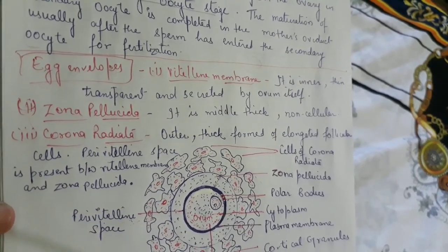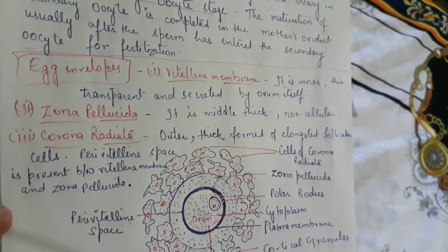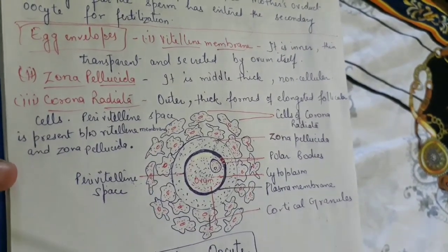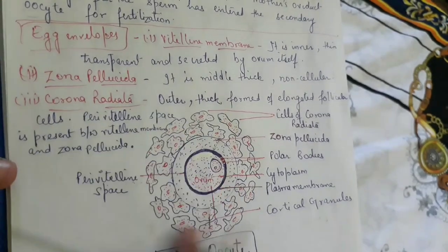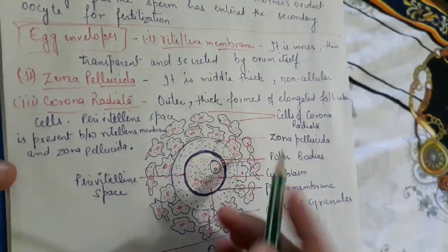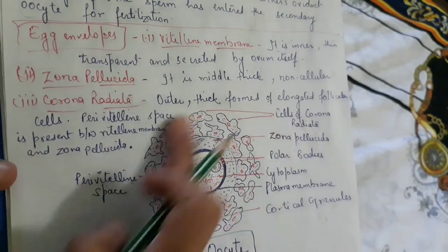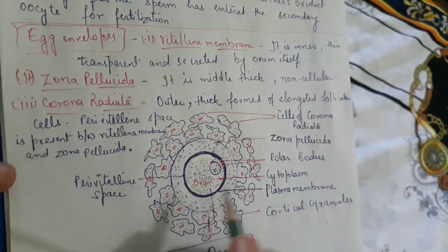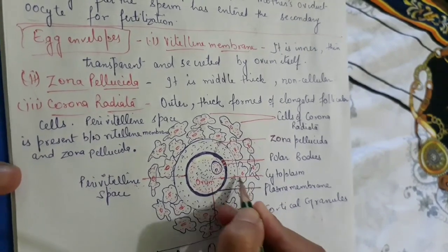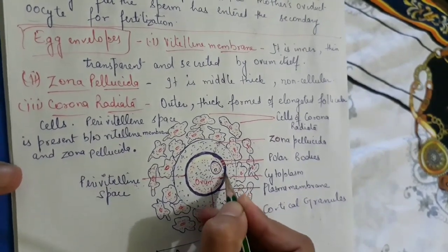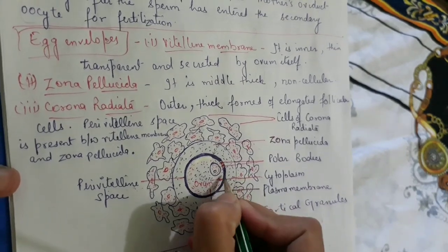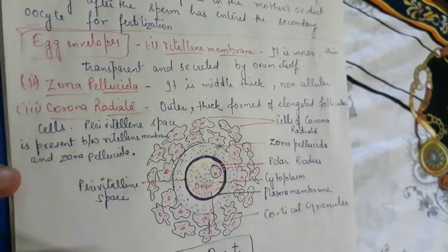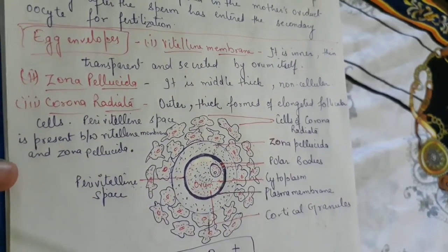We will study these three layers. The vitelline membrane is the inner, thin, and transparent layer secreted by the ovum itself. The second is zona pellucida — the middle layer, which is thick and non-cellular. The third is corona radiata — the outer layer made of thick, elongated follicular cells. Between the zona pellucida and the vitelline membrane there is a space called the perivitelline space.